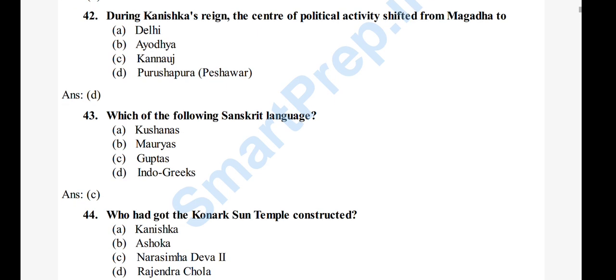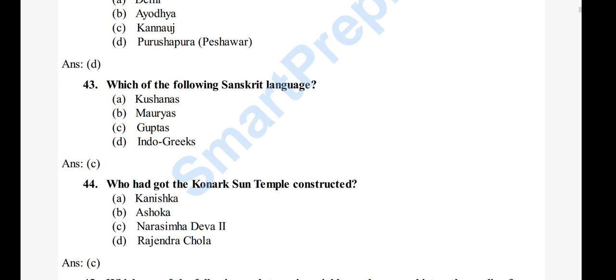Question 44: Who got the Konark Sun Temple constructed? Options: A) Kanishka, B) Vasoka, C) Narasimha Deva, D) Rajendra Chola. The right answer is option C, Narasimha Deva. This is a very important question.